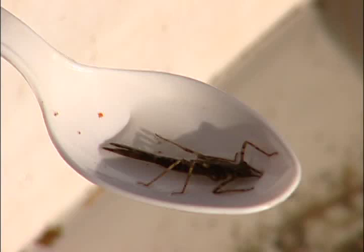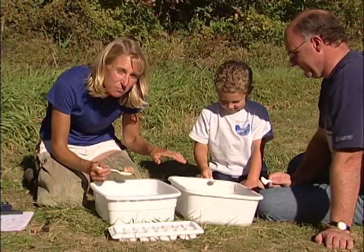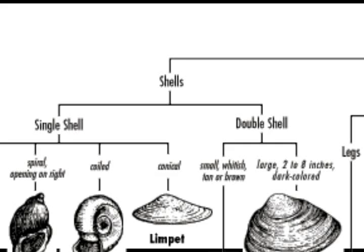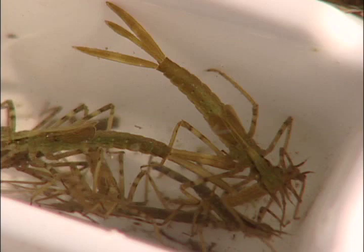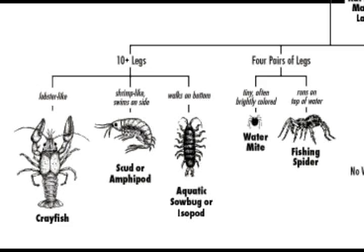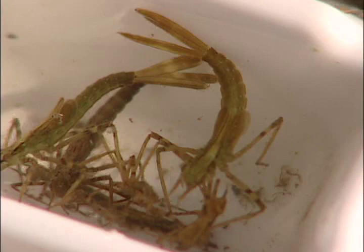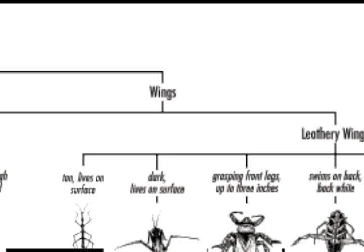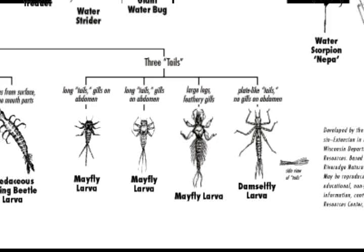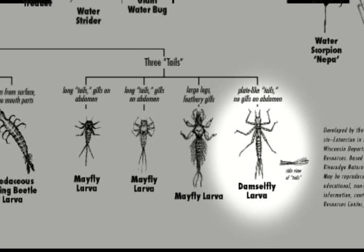Adam identifies the macroinvertebrate as a damselfly. If you don't know what you have in your sample, you can use the key to macroinvertebrate life in the river to figure it out. The first question is whether the macroinvertebrate has a shell or no shell. Because this one doesn't have a shell, you check if it has legs or no legs. It has legs, so you determine whether it has ten or more pairs, four pairs, or three pairs of legs. This one has three pairs, so next you check for wings or no wings. It has no wings, so you check for no obvious tails, one or two tails, or three tails. It has three tails, so you look through the pictures and words to confirm — as Adam told us, it is a damselfly.